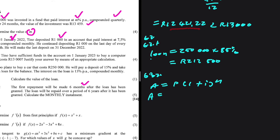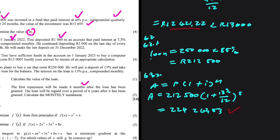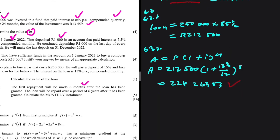Using A = P(1 + i)^n, the new loan balance equals 212,500 × (1 + 13%/12)^5. If you put that in your calculator you get R224,262.53 — this is the balance six months after the loan was granted.